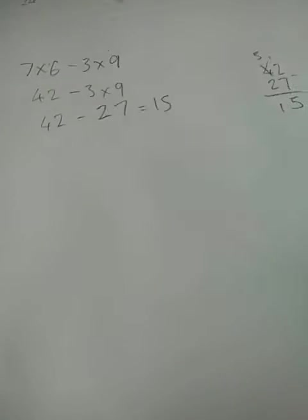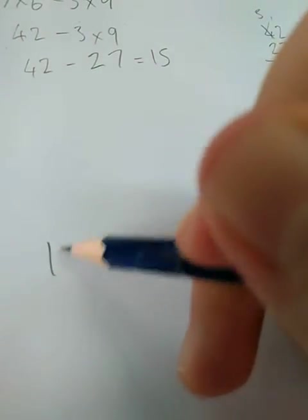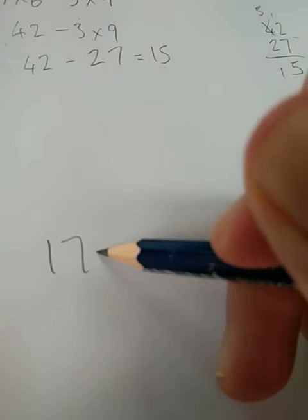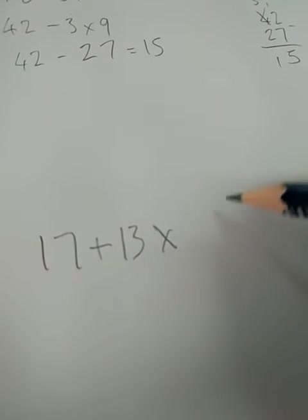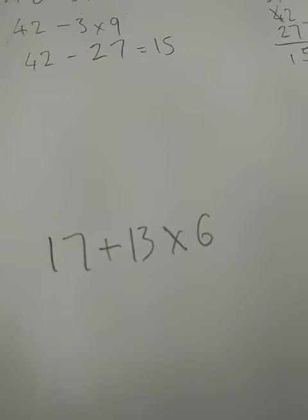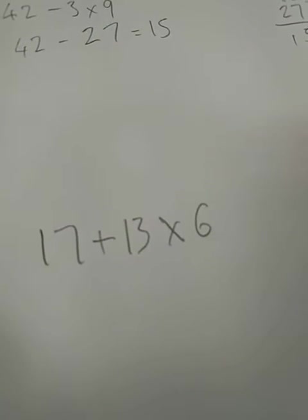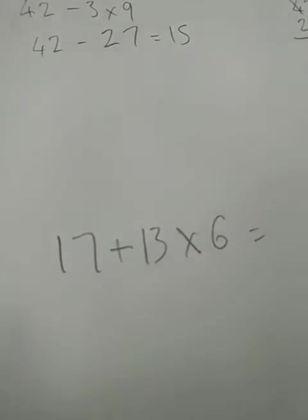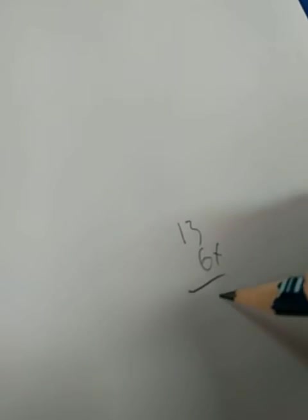We're going to do one more practice type of question before I let you away to try it yourself. This time we've got an equation 17 plus 13 multiplied by 6. So if we solve this that would be 13 times 6. So that would be 13 times 6 gives us 78.